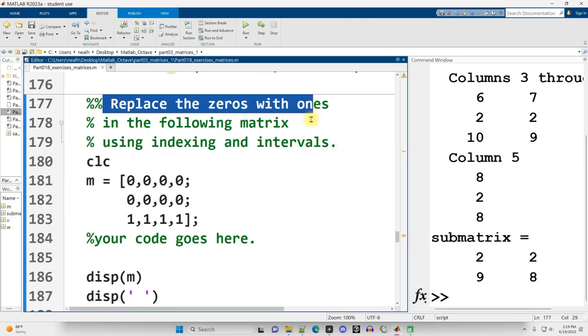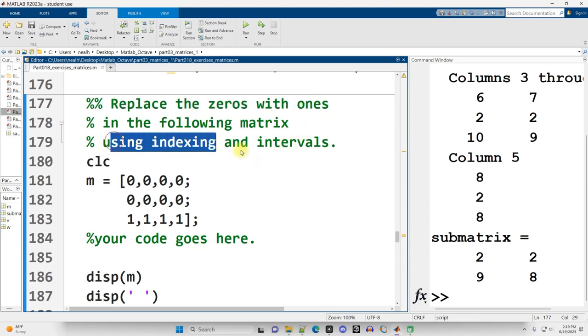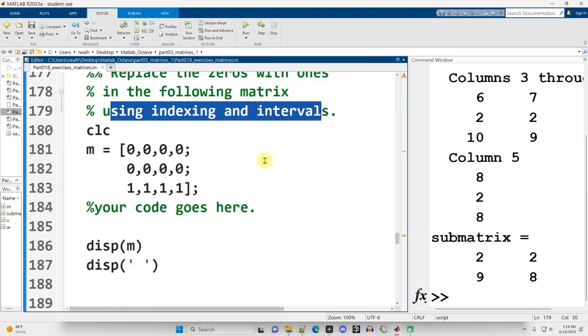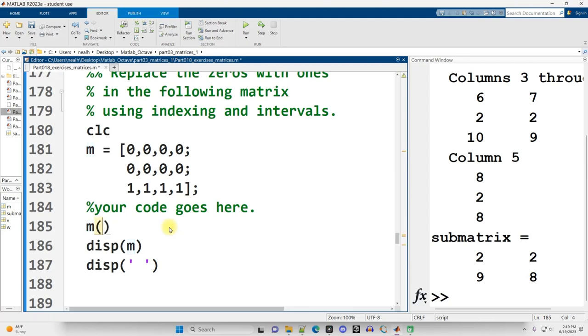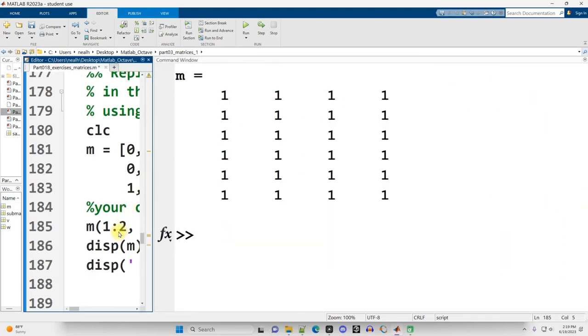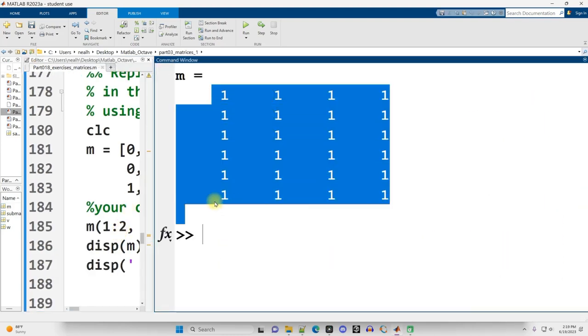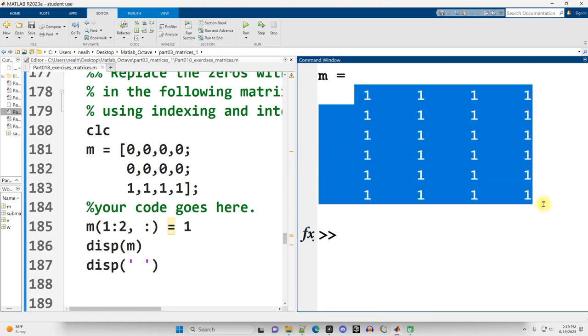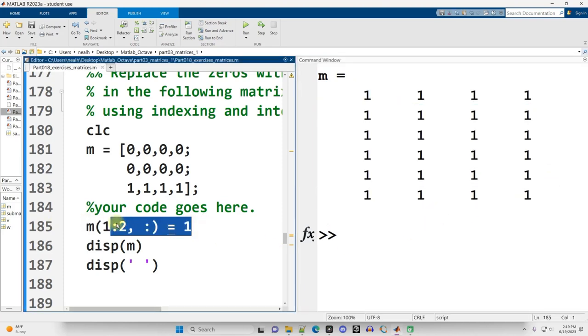All right, replace the zeros with ones in the following matrix using indexing and intervals. So to do this, we would say M, parentheses, rows 1 through 2, comma, columns, 1 through end, all of them. Actually, no, sorry. That would work, but you could also just say colon for all columns. And MATLAB actually lets you get away with just equals 1. And as you can see, it's just replaced those values with all ones.